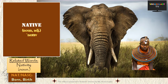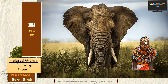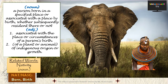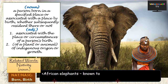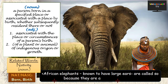If you belong to a particular place by birth, you would be called a 'native' of that place — like we can see an African native posing in this picture. The term can also be used to describe plants and animals which are indigenous to a place. For example, African elephants, known for their large ears, are called so because they are a native of Africa.